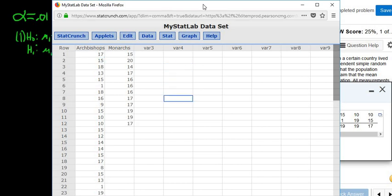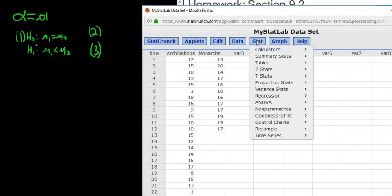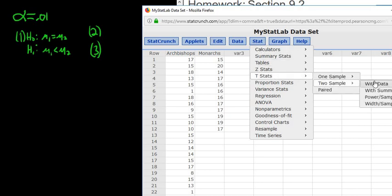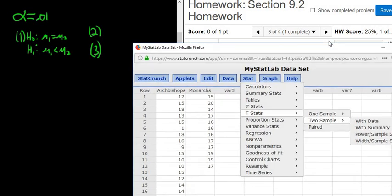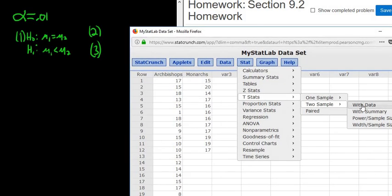So now what you do is you go to t. So we go to stat, t, to sample, and it's with data because they're giving us data. So whenever they give you the data, it's to sample with data, right? And that's because it says independent. Later on we're going to study dependent samples. If it says dependent in the problem you would use paired. But in this case it says independent very clearly, so it's with data.